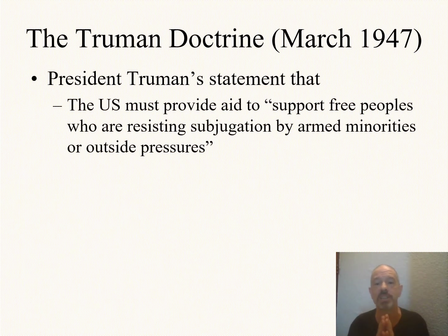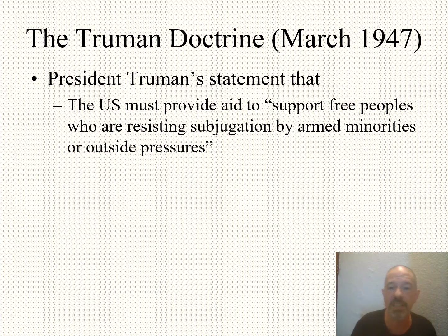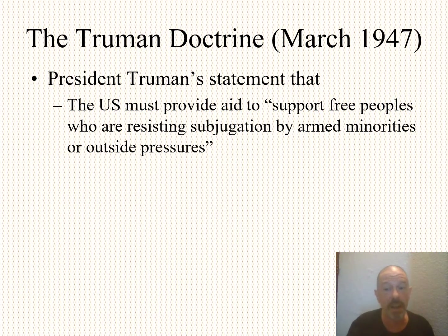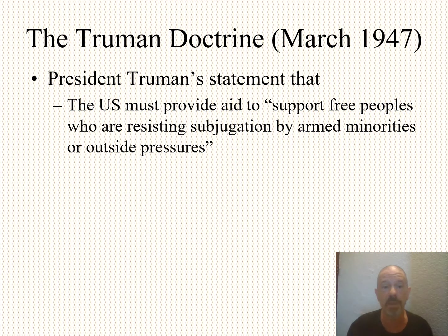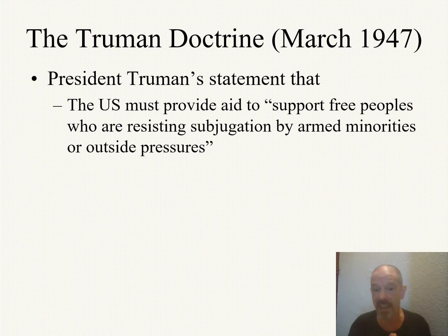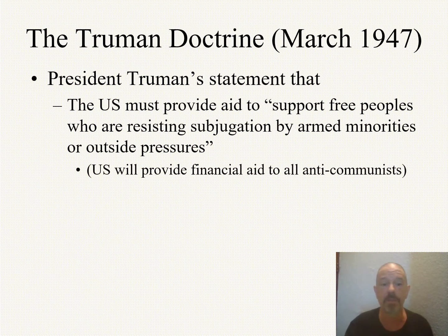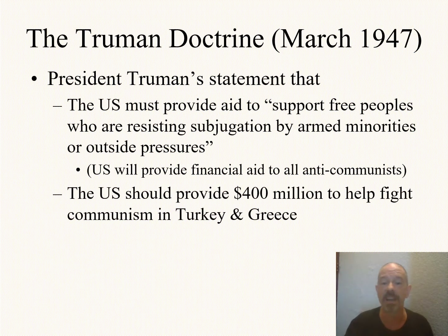The United States must provide aid to support free peoples who are resisting subjugation by armed minorities and outside pressures. A lot of these so-called free peoples were living under military dictatorships — but from the U.S. perspective, a free people is a non-communist state. Resisting subjugation by armed minorities means a communist guerrilla movement within a country, and outside pressures refers to the Soviet Union — the international communist movement. So the U.S. is going to provide financial aid to non-communists. Specifically, he asked Congress, and Congress agreed, to provide $400 million in aid to help fight communism in Turkey and Greece.